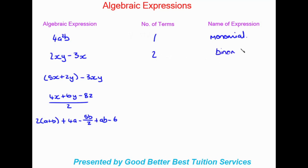There is an exception to the addition and subtraction rule: if we have two terms inside a bracket, they count as a single term. So '5x + 2y' in brackets counts as one term, and the other part with the negative sign is a separate term. So in this expression we still have two terms, and we know that is called a binomial.